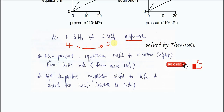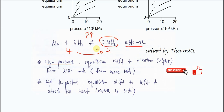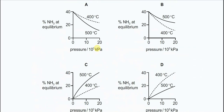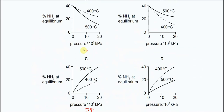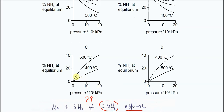That's the effect of pressure. To produce more ammonia, we need to use high pressure. This means you should have a graph like C or D, because if we use 500°C, when pressure increases, the percentage of ammonia increases.